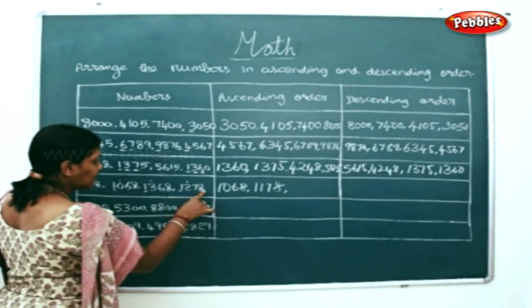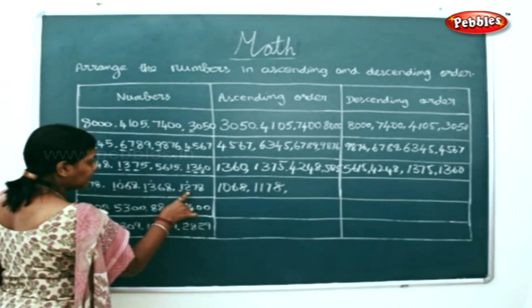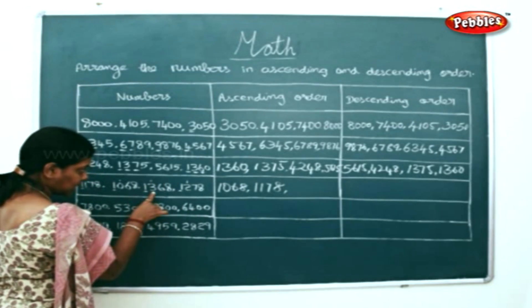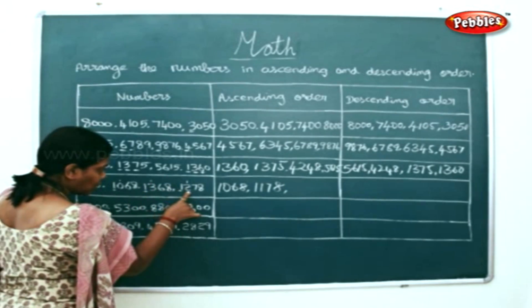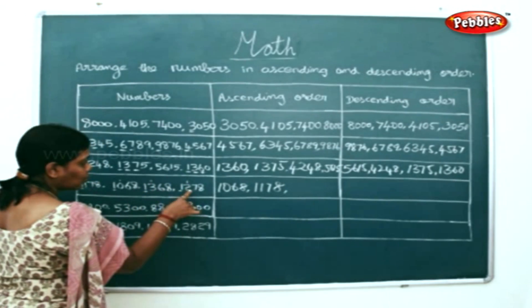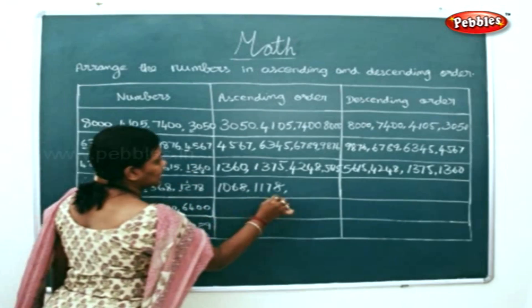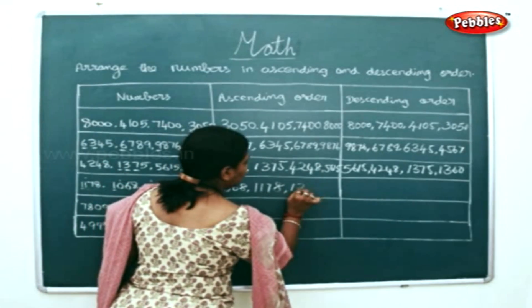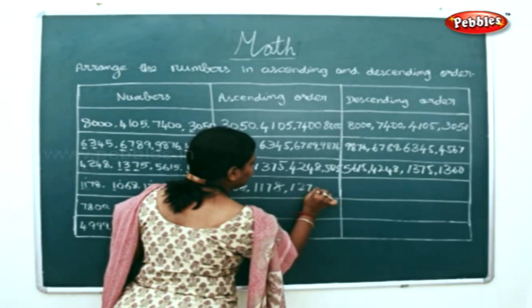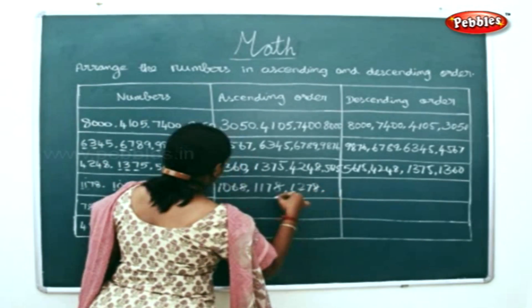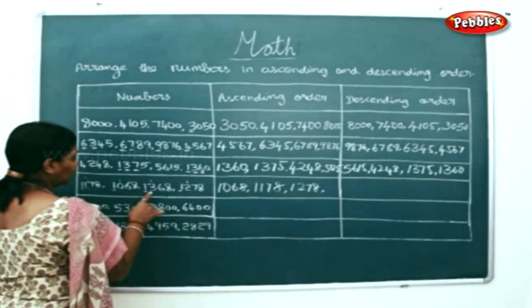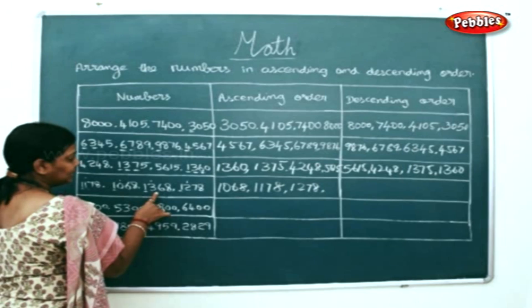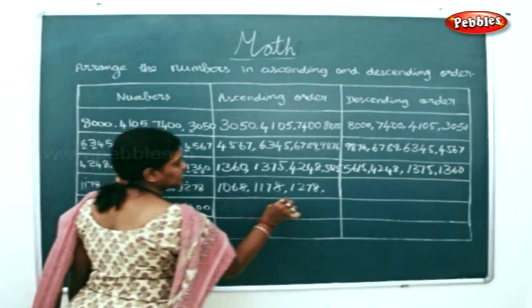In the hundreds place, you have a 2 here and a 3 here. So, 2 is lower than 3. So, 1, 2, 7, 8. And the highest number will be 1, 3, 6, 8.